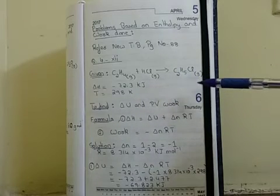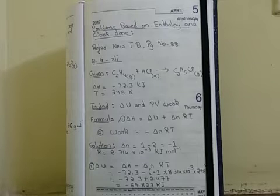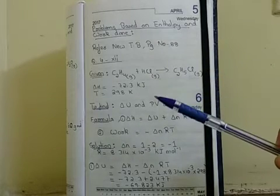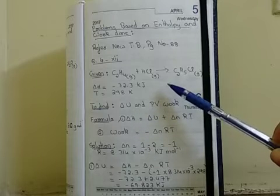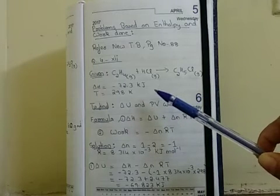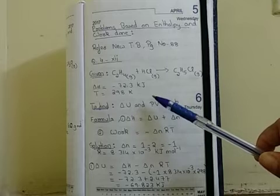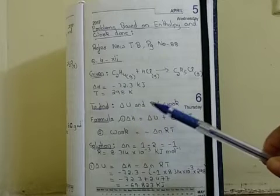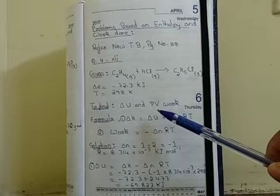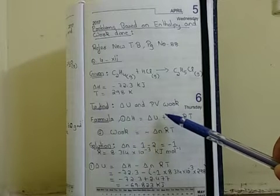It is very important that we write down the states of all species. For this given reaction, they have asked us to calculate ΔU at 298 Kelvin and also to find out the pressure-volume work. The given data is that ethylene combines with HCl to give ethyl chloride, with an enthalpy value of ΔH = -72.3 kilojoules at a temperature of 298 Kelvin. From the question, we need to find ΔU — that is internal energy — and pressure-volume work.